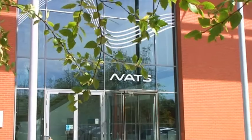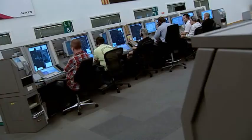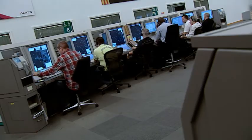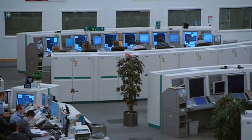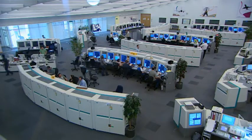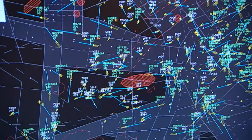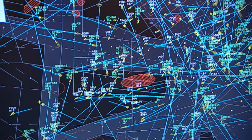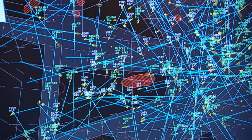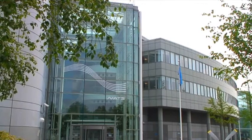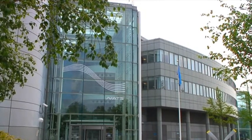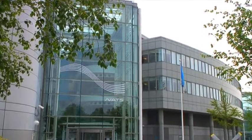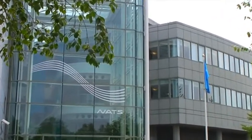NATS provides air traffic control services to aircraft flying in UK airspace and over the eastern half of the North Atlantic. The UK has some of the busiest airspace in the world, and it's particularly complex in south-east England. We handle more than 2.1 million flights a year, a figure that's doubled in just 20 years. And our job is to ensure we manage them safely and efficiently with room for future growth.